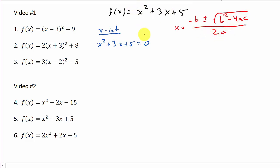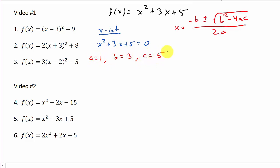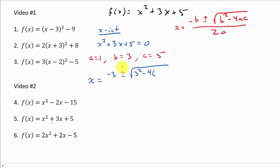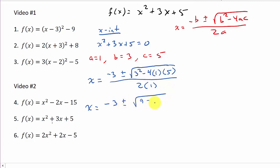Remember: a is the coefficient of x², b is the coefficient of x, and c is the constant term. Here we have a = 1, b = 3, and c = 5. Plugging in: x = (-3 ± √(3² - 4(1)(5))) / 2(1), which gives x = (-3 ± √(9 - 20)) / 2.